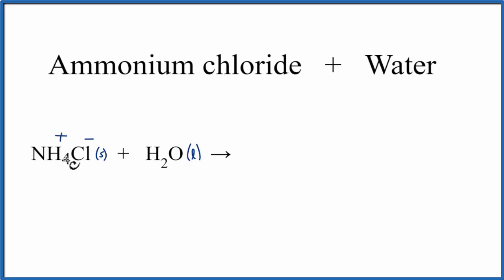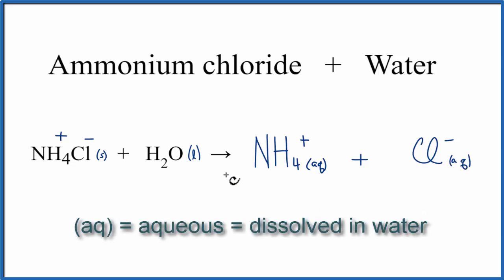So we'll have this ammonium ion, this NH4 plus, and then the chloride ion. Because these two ions are in water, they're dissolved in water, we can write an AQ after each one, which means aqueous. Aqueous just means they're dissolved in water. So we don't have to write H2O on this side of the equation, because we've already written aqueous, and that means they're dissolved in water.